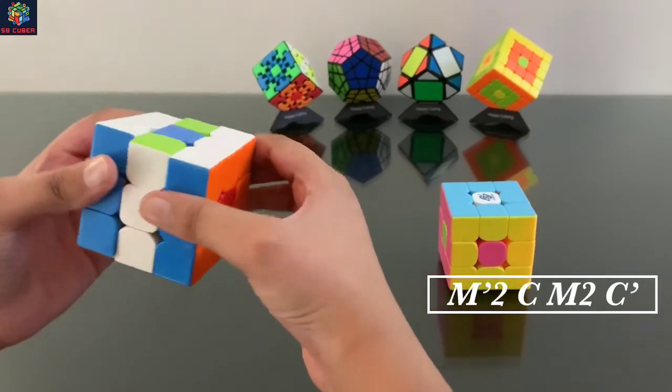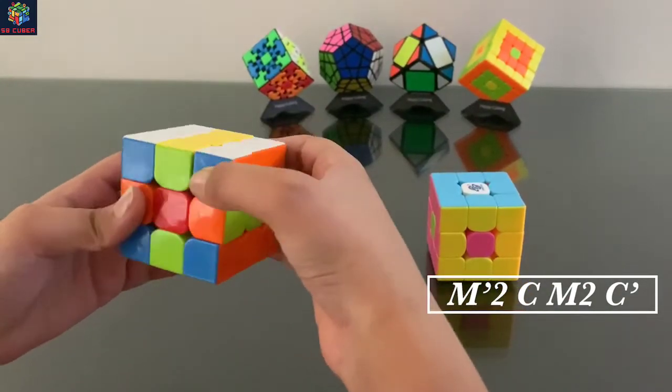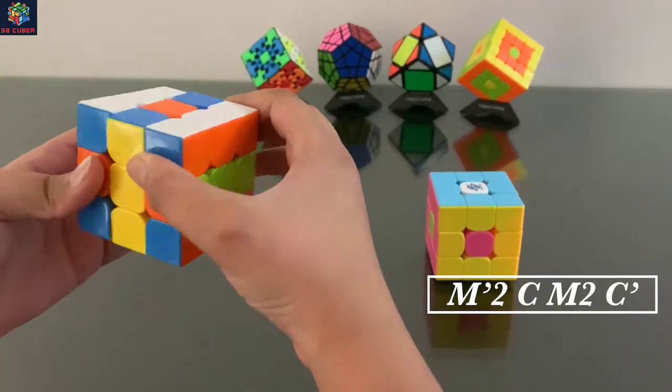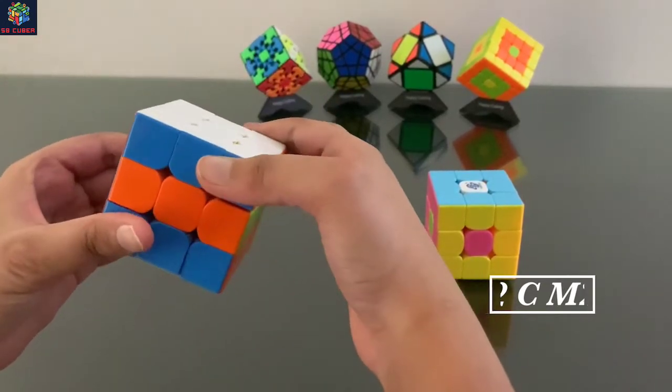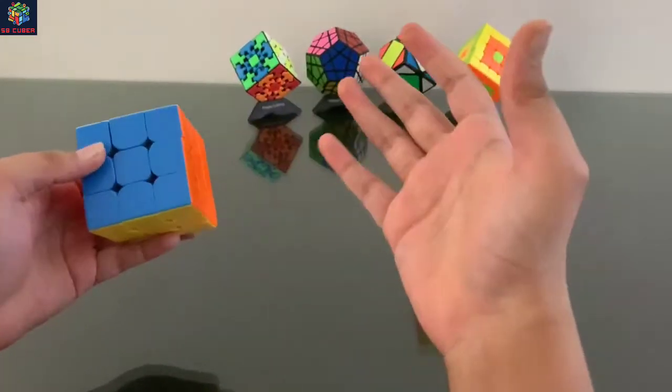Again M2, then C, again M2, and then C dash. You see, for getting it back we just had four moves to get it back.